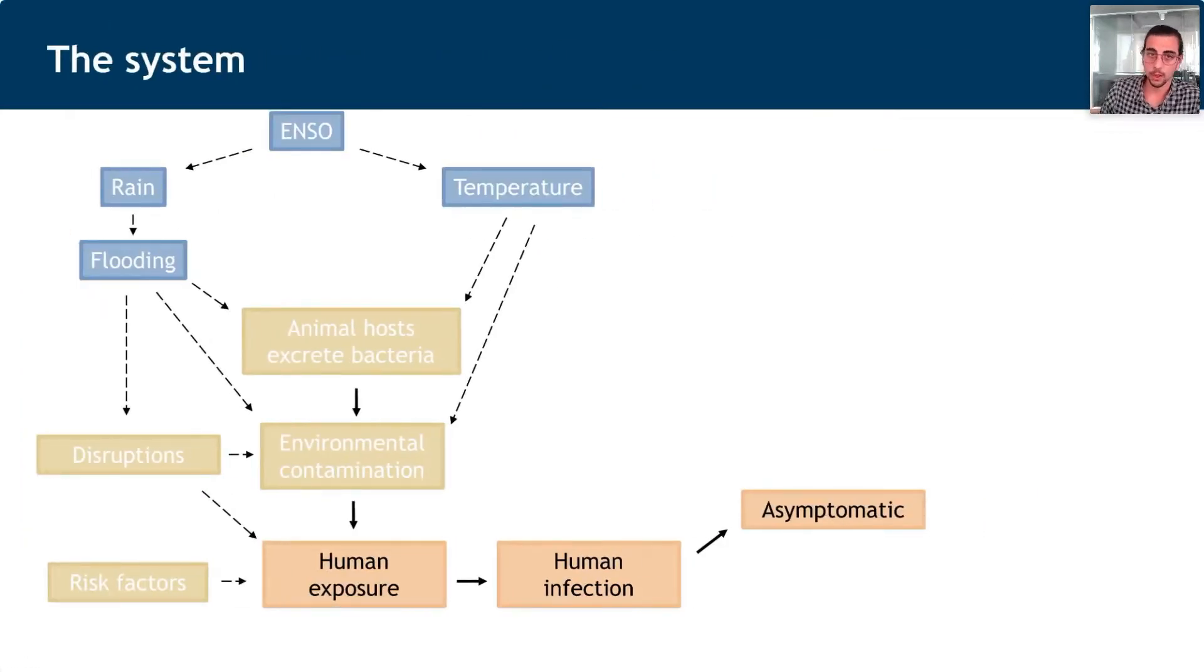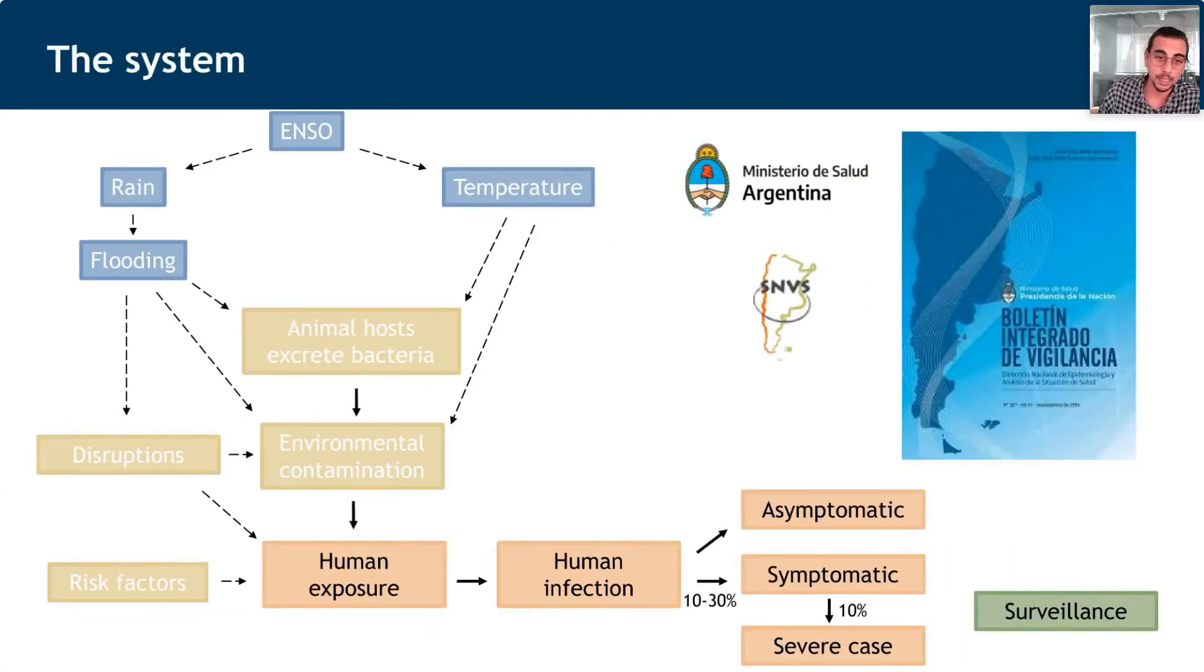When infections occur, most are asymptomatic, but 10 to 30% become symptomatic with the typical febrile syndrome. Ten percent of these symptomatic cases become severe, requiring hospitalization, and can lead to potential death through kidney failure or pulmonary hemorrhage. When we're working with surveillance data, the only cases captured are the symptomatic cases and those requiring hospitalization. In the context of Argentina, this is captured by the national surveillance system managed by the Ministry of Health.